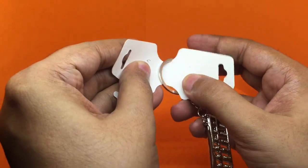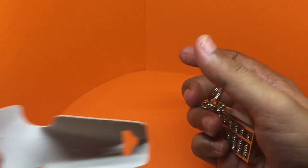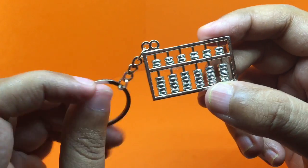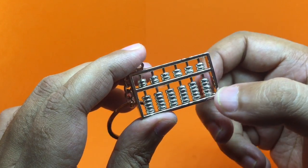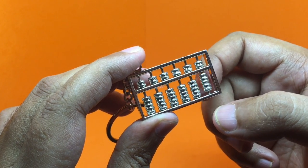For that you get a keychain with a real working abacus. As you can see, all the individual beads can be moved.